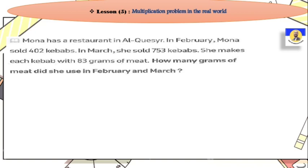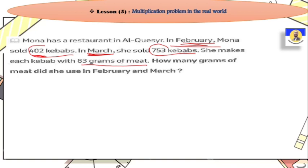Number one: Mona has a restaurant. In February, Mona sold 402 kebabs. In March — the second month — she sold 753 kebabs. She makes each kebab with 83 grams of meat. So 402 kebabs each made with 83 grams, and 753 kebabs each also made with 83 grams. So how many grams of meat did she use in February and March?